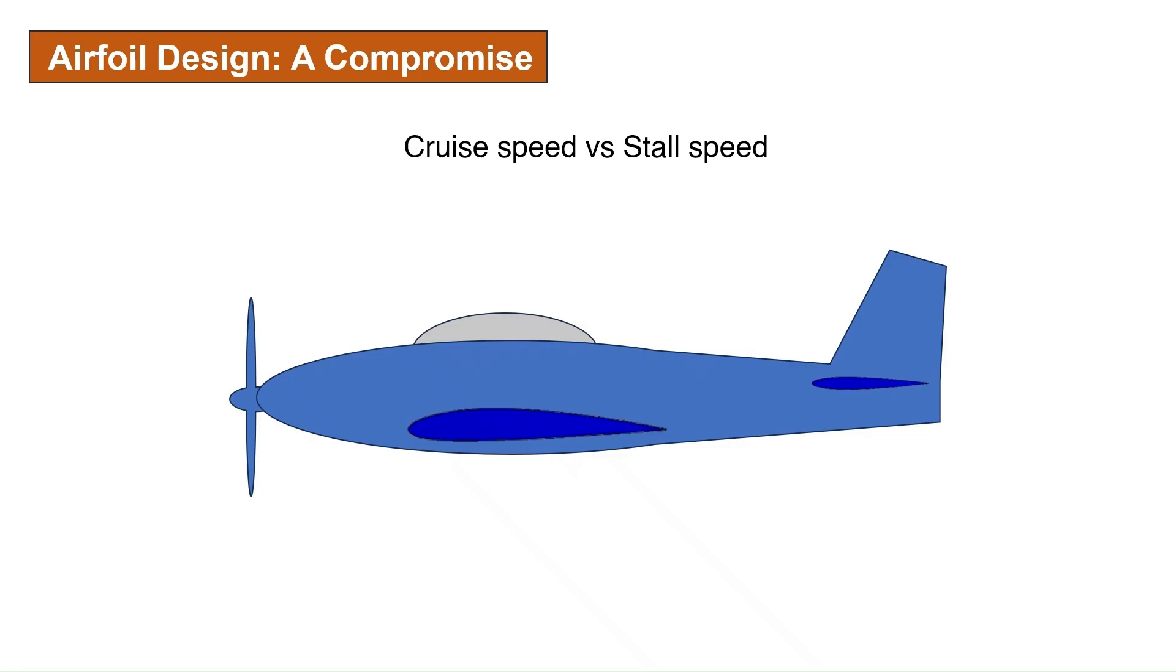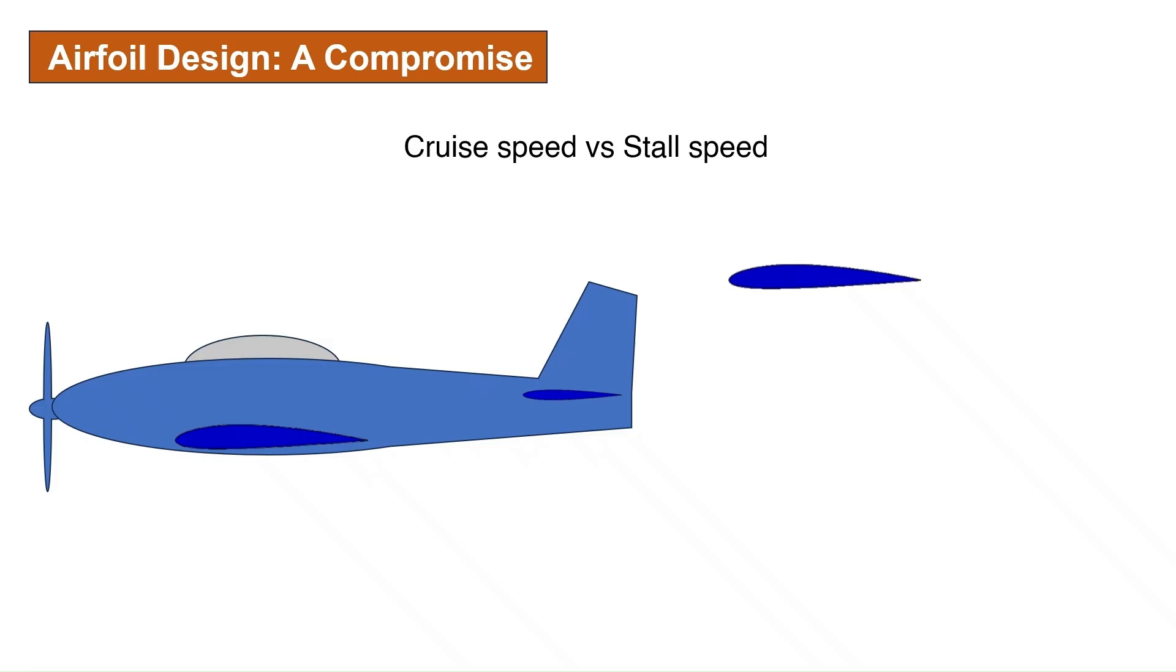The stall speed and cruise speed exemplify the inherent compromise in airfoil selection. Suppose you wish to design a fast cruising plane that has low drag. If we select an airfoil with a low drag coefficient, it will usually not have a very high max lift coefficient, which means the stall speed will be high.